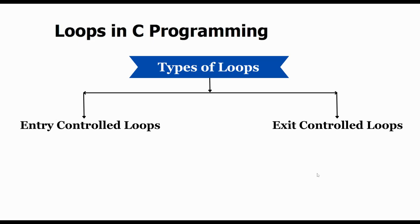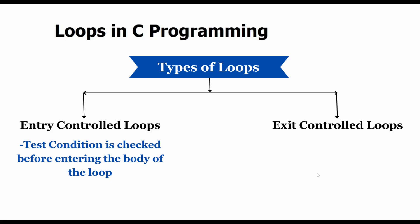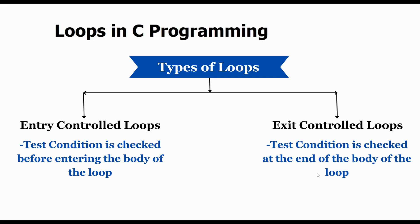There are basically two types of loops in C programming. The first one is entry control loops and the second one is exit control loops. In entry control loops, the test condition is checked before entering the body of the loop, whereas in exit control loops the test condition is checked at the end of the loop body. So in the exit control loop the body will execute at least once irrespective of whether the condition is true or false. For and while loops are entry control loops, whereas do-while is an exit control loop.